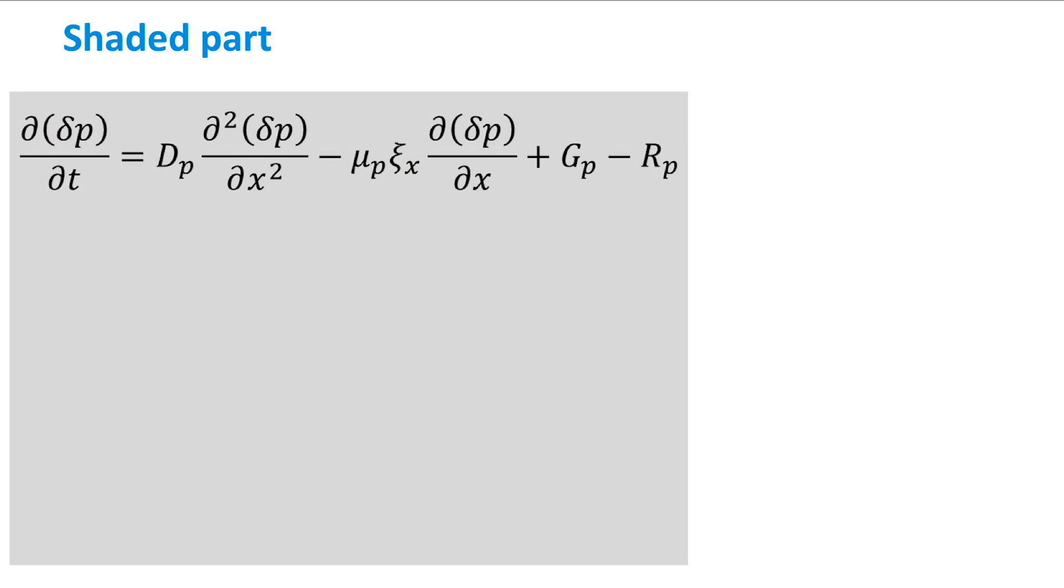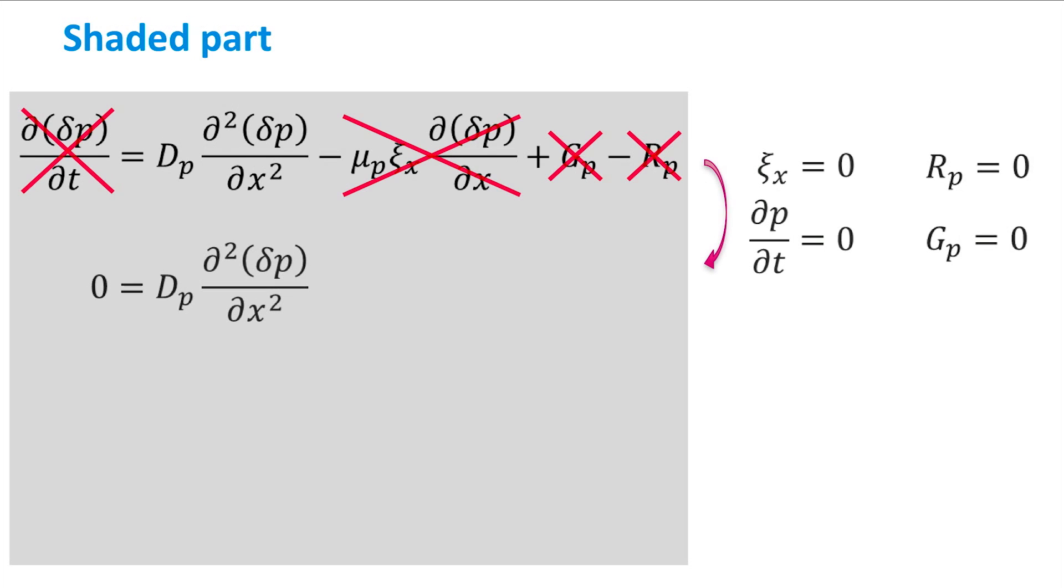We do the same for the shaded part, first removing several terms from the ambipolar transport equation, then solving the differential equation leading to the following equation, and here c3 and c4 are also integration constants. We now have obtained two equations with four unknown constants.